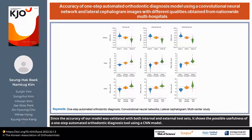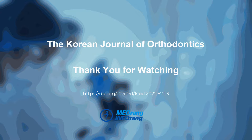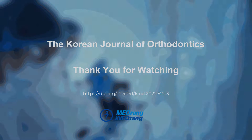Since the accuracy of our model was validated with both internal and external test sets, it shows the possible usefulness of a one-step automated orthodontic diagnosis tool using a CNN model. However, it still needs technical improvement in terms of classifying vertical dental discrepancies. Thank you for watching the Korean Journal of Orthodontics article.